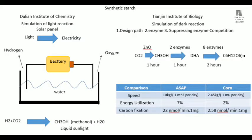Chinese scientists have now achieved the artificial synthesis of starch. To simulate photosynthesis, there are two parts: one is the light reaction and one is the Calvin cycle. The light reaction produces energy — who carries out this step in the artificial method? The artificial process simulates the light reaction, but it is not exactly the same.